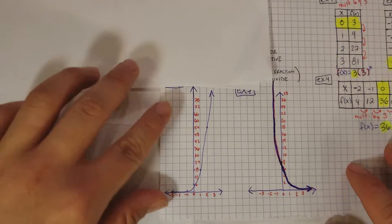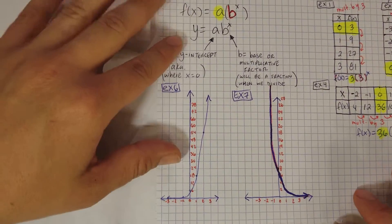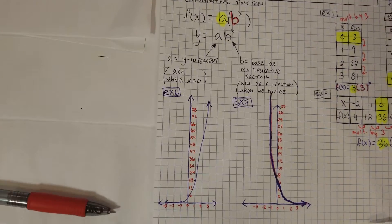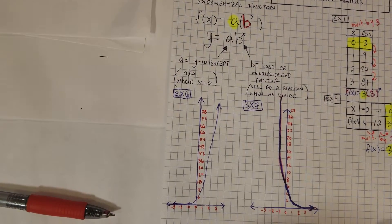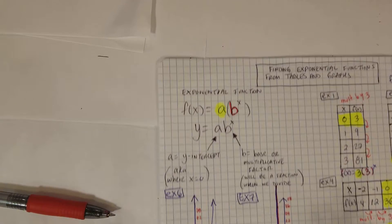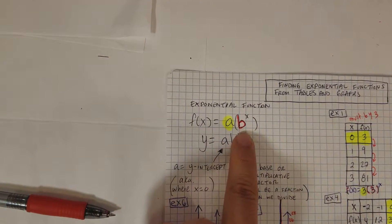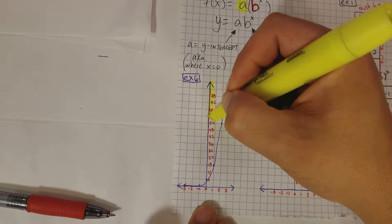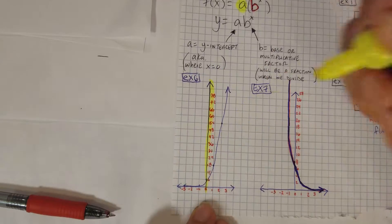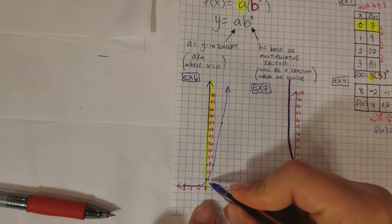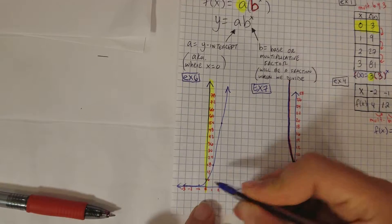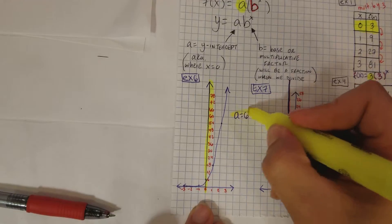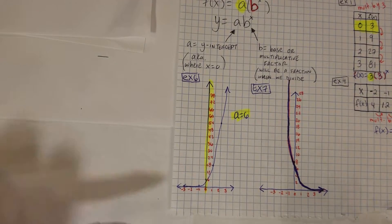Now we have graphs. Let's say we have some graphs and you want to figure out what is the function that goes along with this graph. The rules don't change — it's going to be the same function: a times b to the power of x, where a is the y-intercept and b is whatever we're multiplying or dividing by. To find the y-intercept, we go to the y-axis. If you notice, the y-intercept here is actually going to be touching at the number 6. So we know right away that a equals 6.